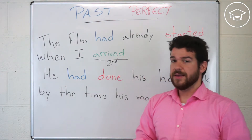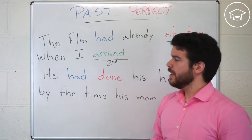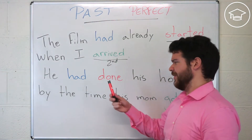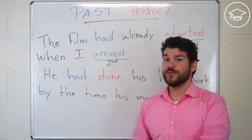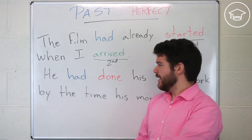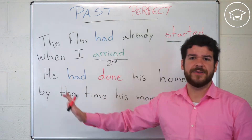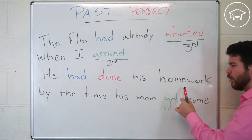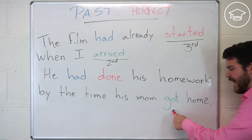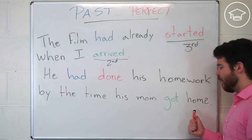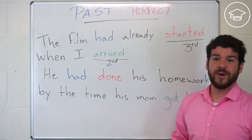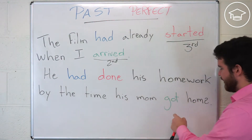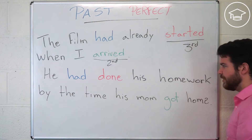Be careful — you're going to be using both simple past and past perfect at the same time in the same sentence. The second column is simple past. So: 'He had done his homework by the time his mom got home.' 'Had' goes for everybody — he had, they had, I had.